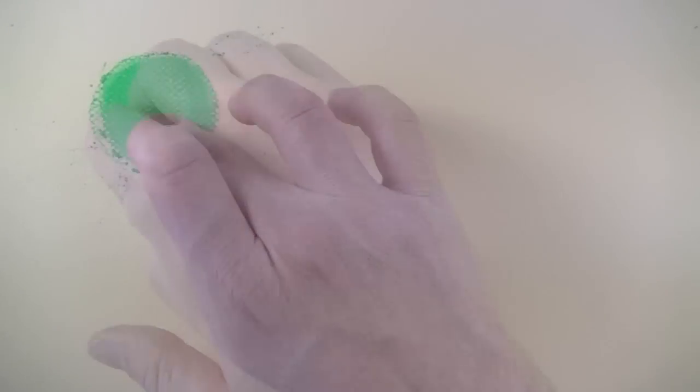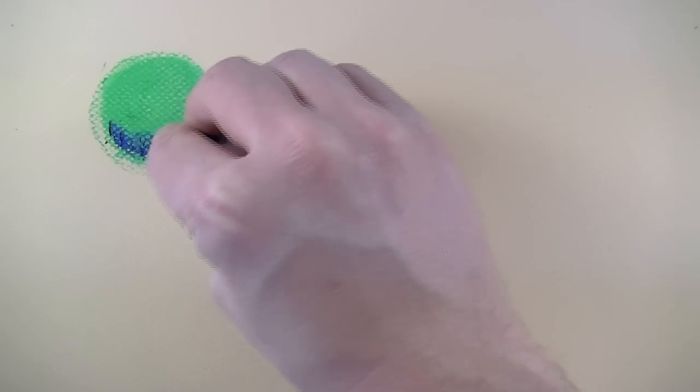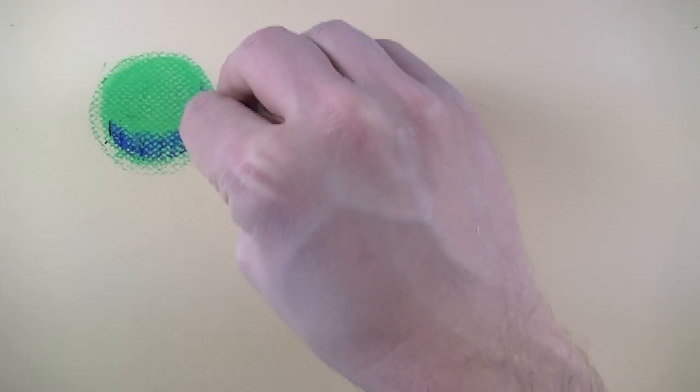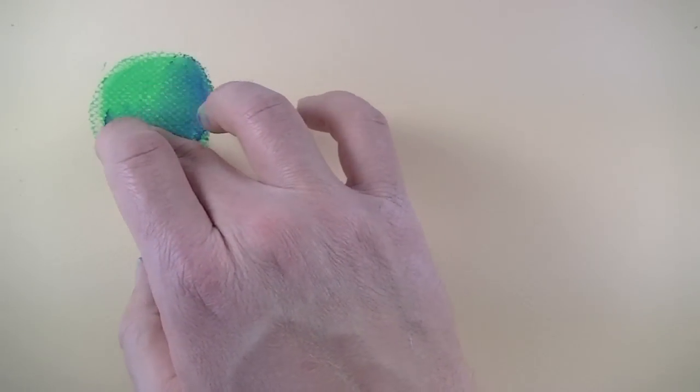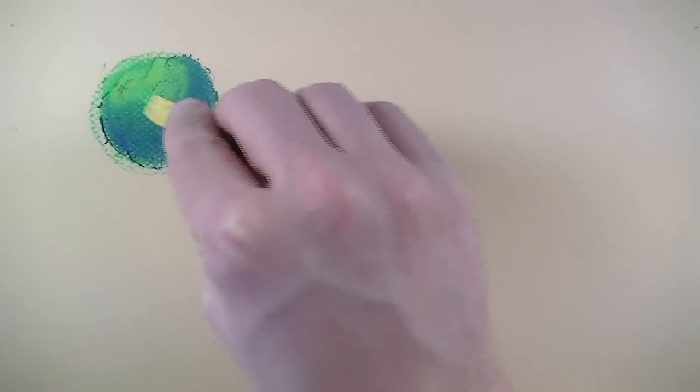I'll begin by layering in the local color, in this case it'll be green, and then working it in with my finger. Next I'll begin to establish some of the core shadow on the sphere by using a dark blue. Here again I'll blend in the transitions with my finger.